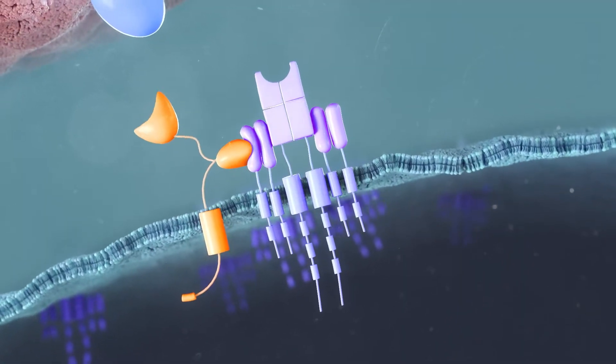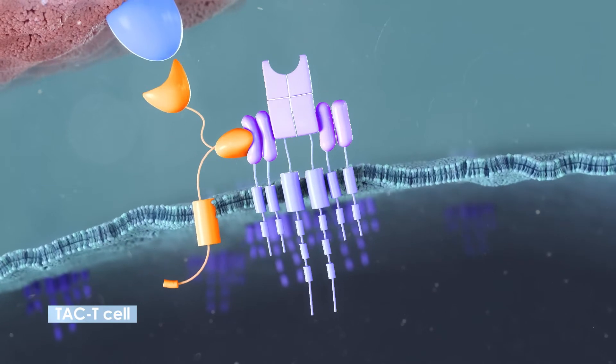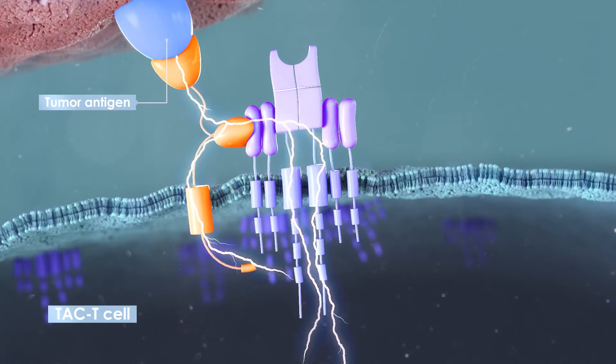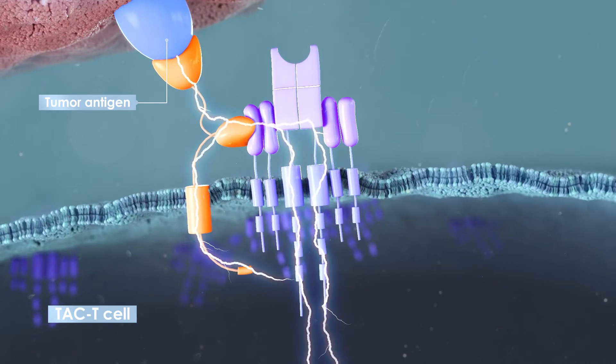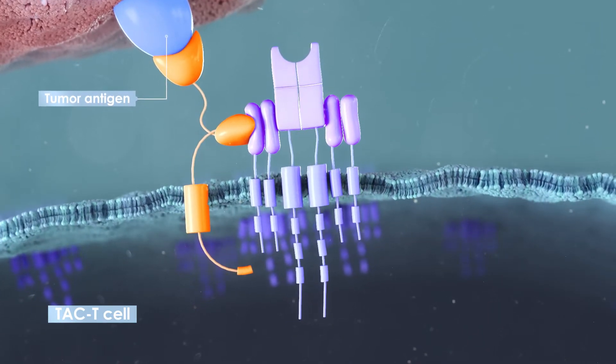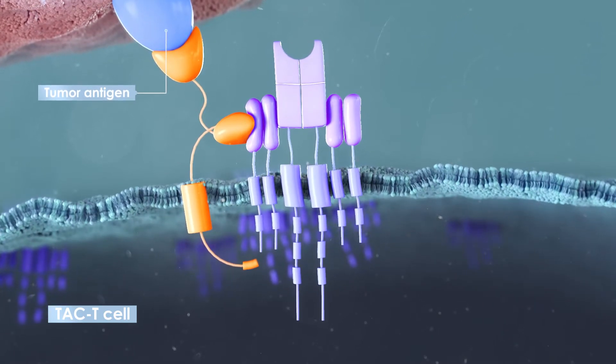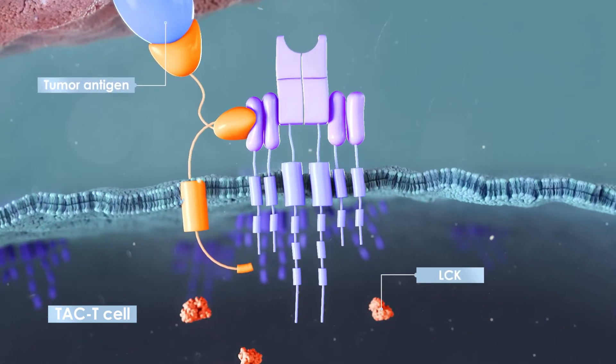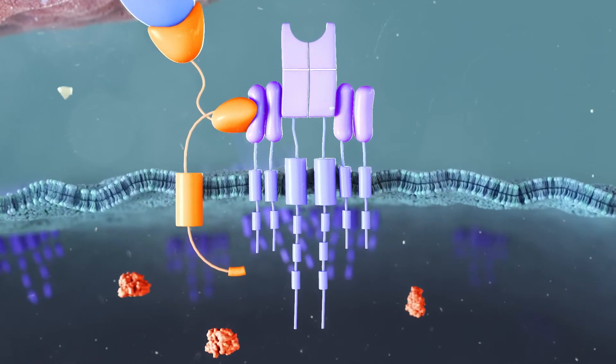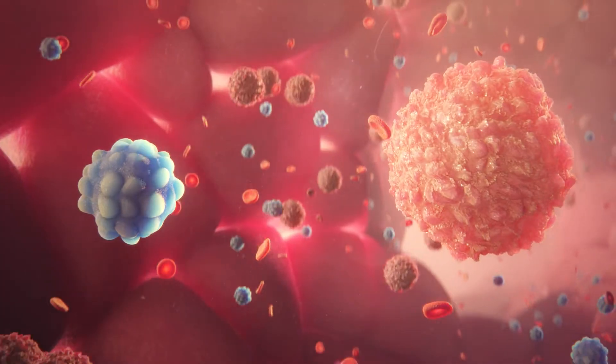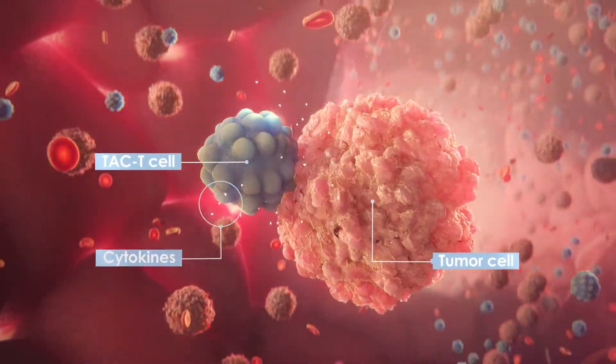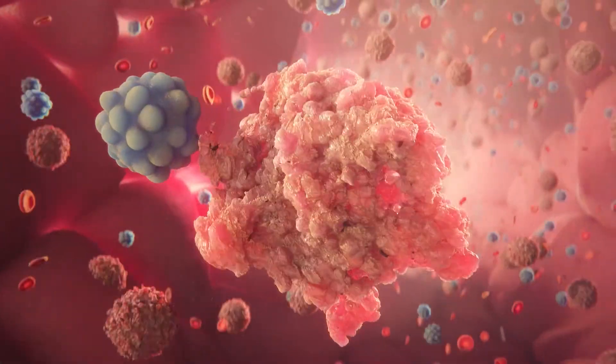TAC T-cells interact with tumor antigens via the TAC antigen binding domain. This triggers natural TCR signaling cascades through the natural TCR and the cytoplasmic TAC co-receptor domain, which can recruit kinases, including LCK, to phosphorylate the TCR and activate the T-cell. Leading to controlled cytokine release and transfer of apoptosis-inducing granzymes into the tumor cell to destroy it.